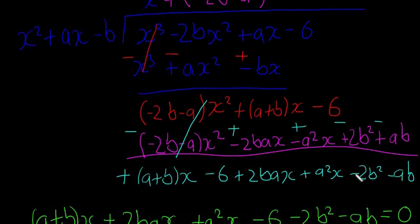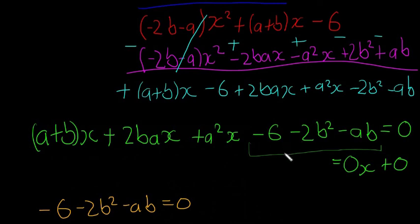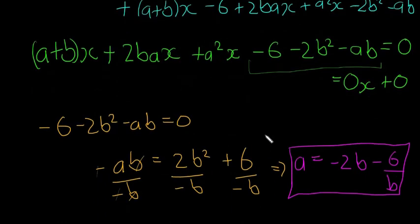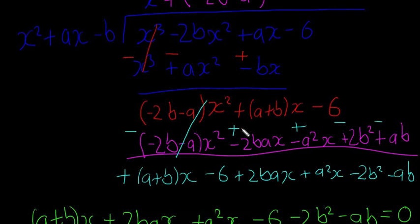Once you have your remainder — one big long term in a's, b's, and x's — let it equal zero. Remember it should equal 0x plus 0, so all the x's equal zero and all the constants equal zero. Use whichever piece of information looks easier to prove what you need. So it's quite a long video but I hope it made sense. It's the same method every single question — same every year — so hope this helped.